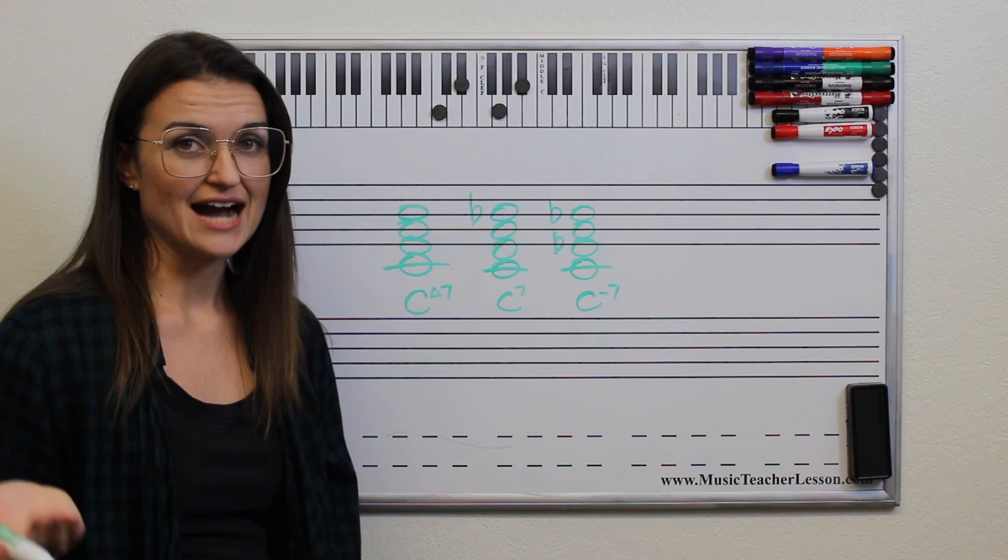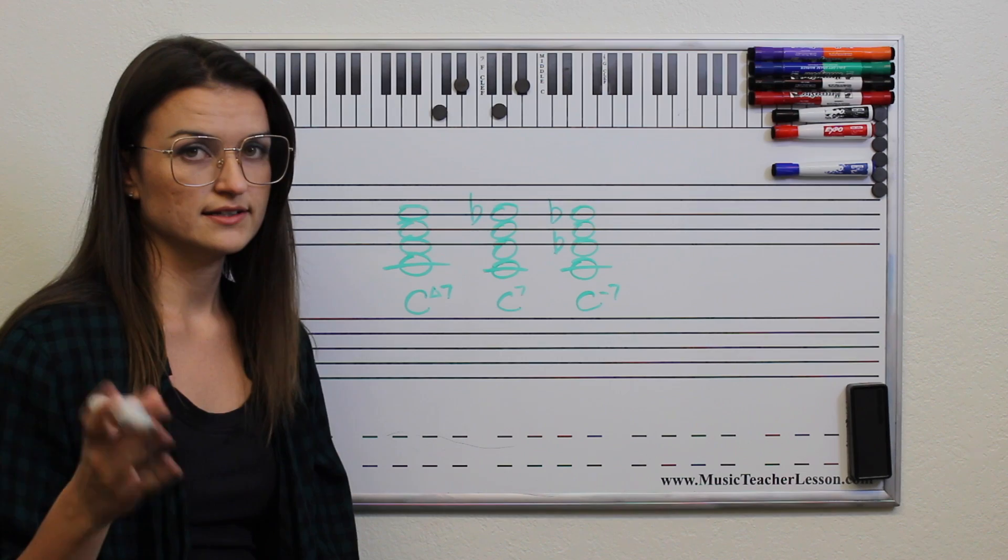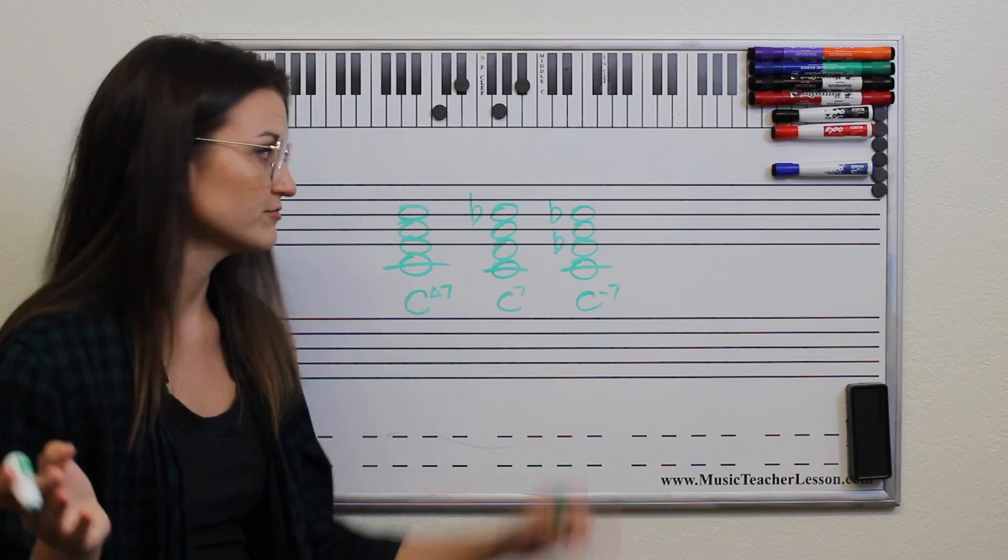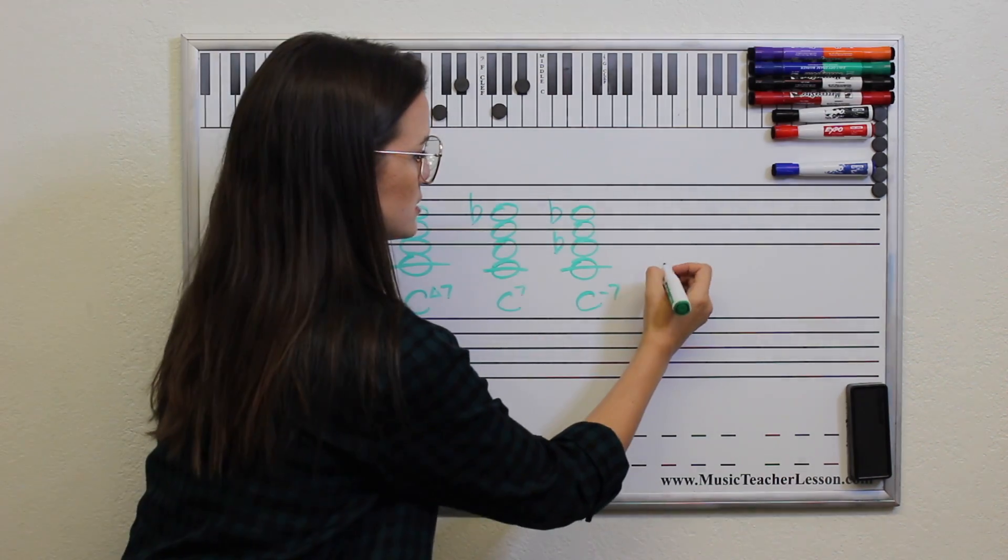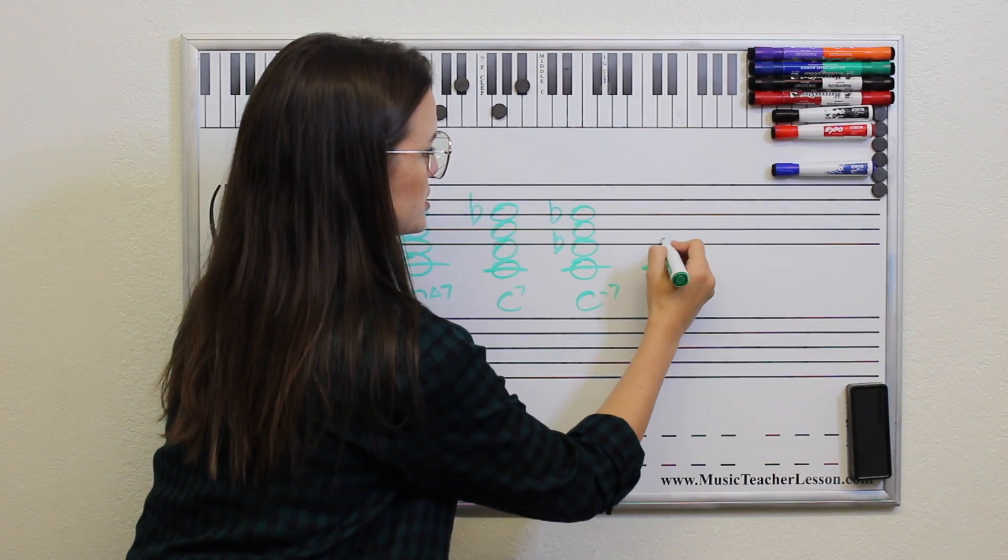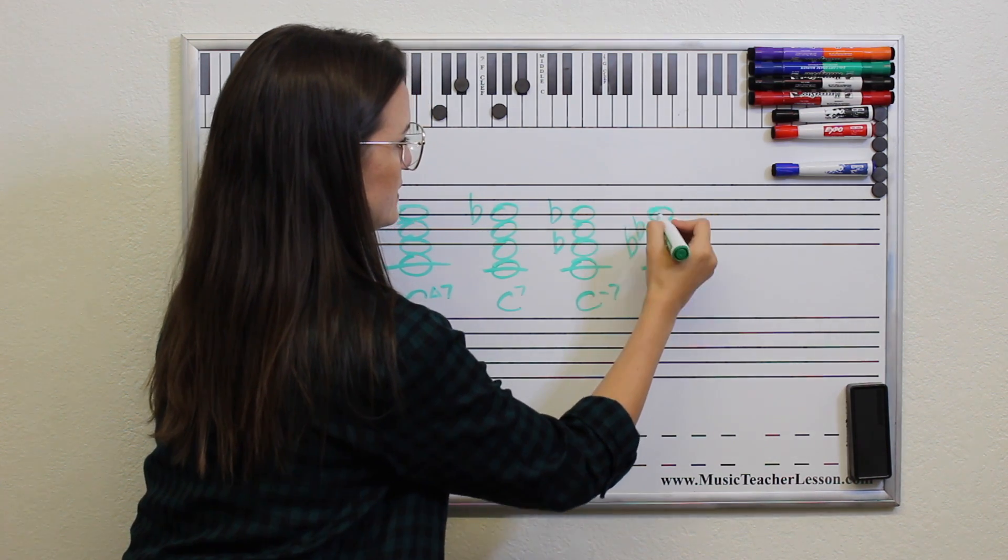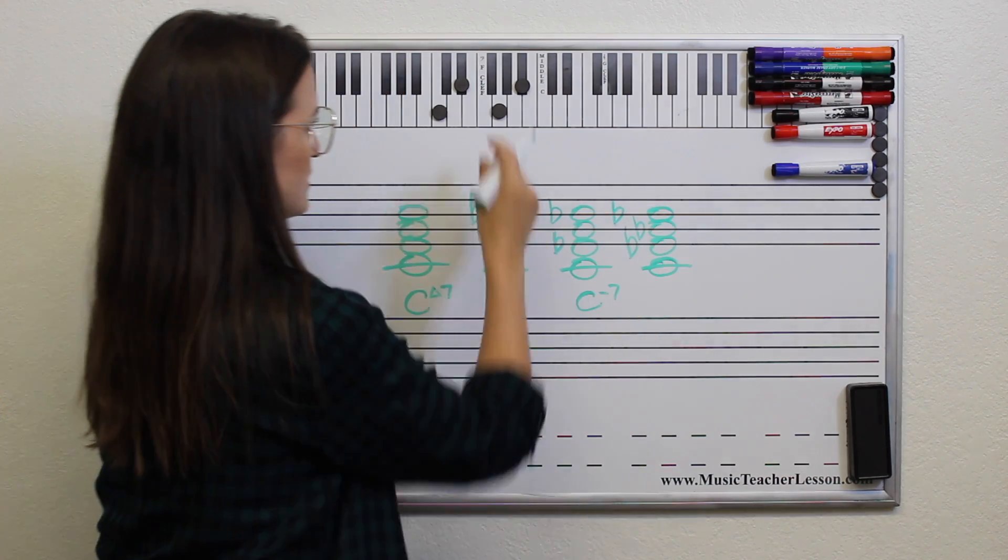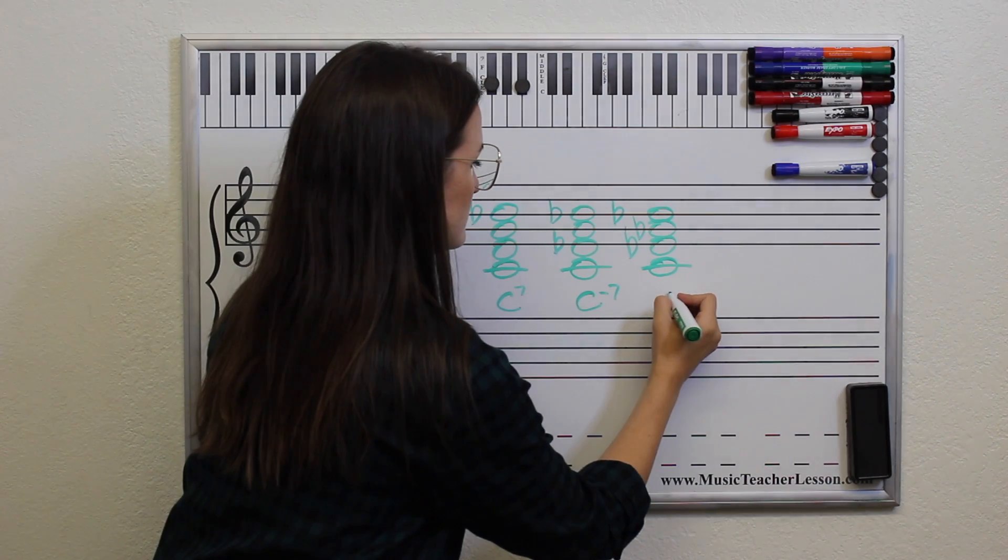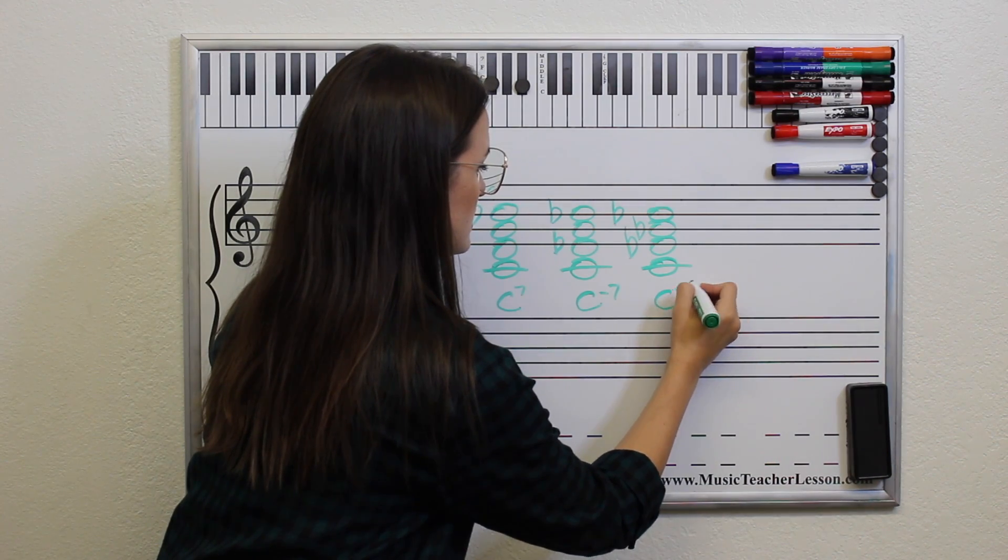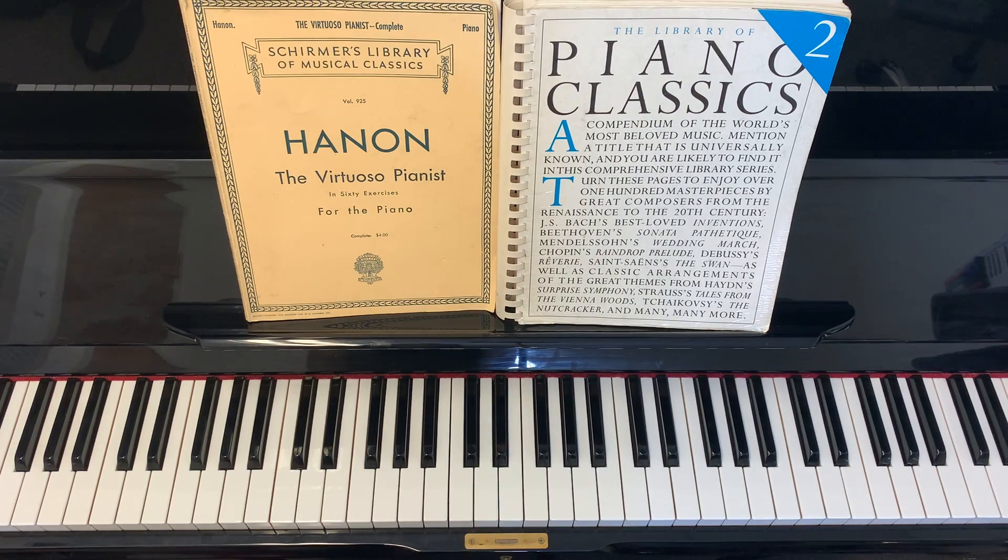Now we're going to go over a half diminished 7th chord. We're going to find a diminished triad and then add the 7th, the flatted 7th, that has been in these last 2, to that one. So the diminished is 2 minor 3rds, which is C to E flat to G flat, and then the minor 7th, which is B flat. And that triad looks like this on the piano. And then we go half diminished is a circle with a line through it. Here is C half diminished 7.